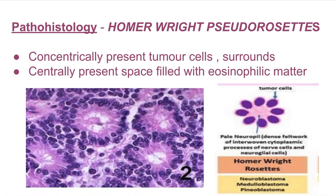Pathohistology is a very important point. Homer-Wright pseudorosettes are seen in neuroblastoma. In the figure below, you can see violet-colored tumor cells present, concentrically arranged. In between, centrally, there is a pink-colored space — that is the eosinophilic matter. These concentrically arranged tumor cells surround the centrally present space filled with eosinophilic matter. This is a Homer-Wright pseudorosette.